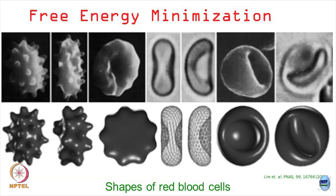We have discussed earlier that the shapes of red blood cells is a classic problem where you can obtain the canonically observed shapes through free energy minimization. You write down the Hamiltonian accounting for the physical forces involved — bending, surface tension and so on — then minimize that free energy for different values of parameters such as bending energy strength and surface tension. For different parameter values you get different shapes as the minimum, and these closely correlate with red blood cell shapes seen in vivo.